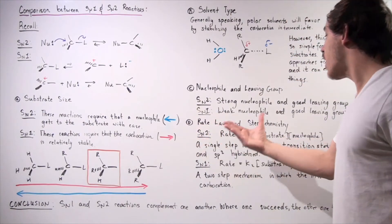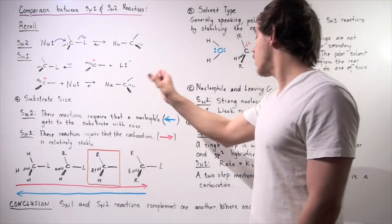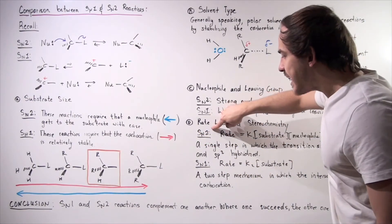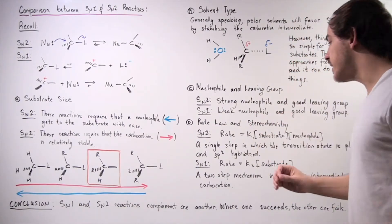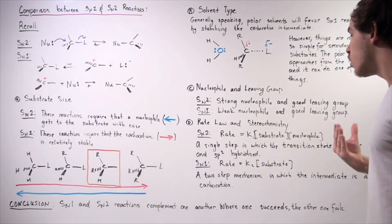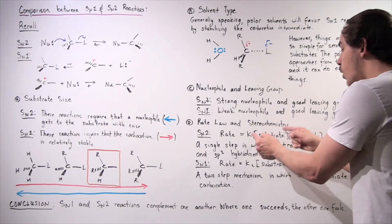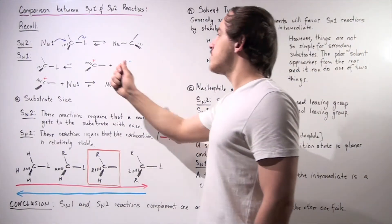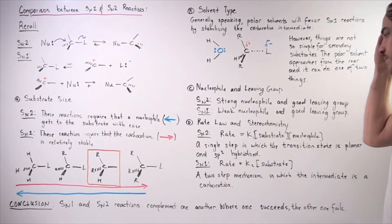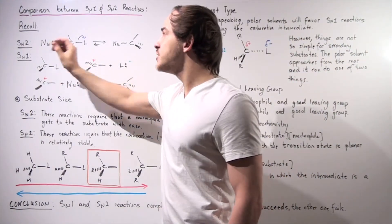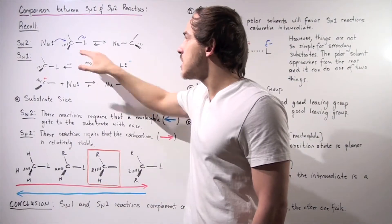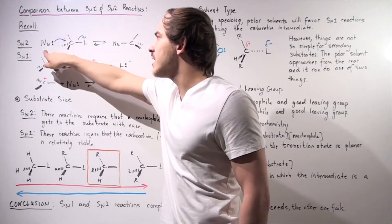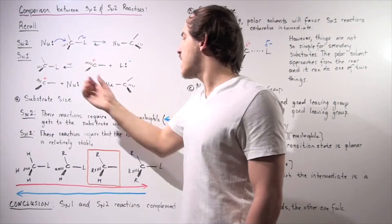Now let's compare the rate law and stereochemistry of our reactions. For SN2 reactions, the '2' stands for bimolecular. In our rate law: rate = k1 × [substrate] × [nucleophile]. So the rate depends on both the concentration of substrate and the concentration of nucleophile. Increasing either of these two concentrations will increase the rate of our reaction.